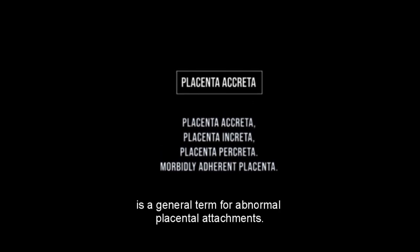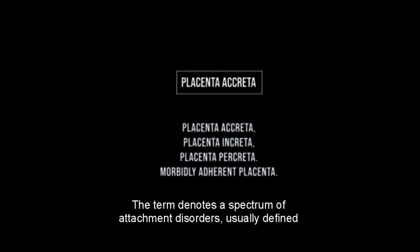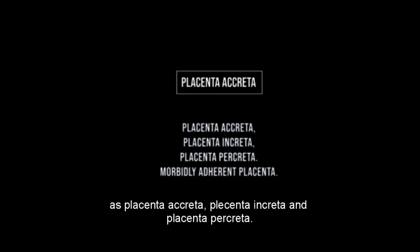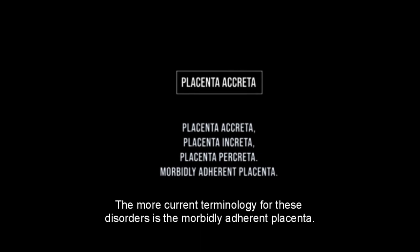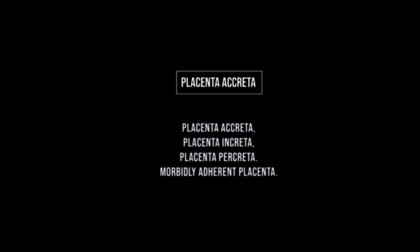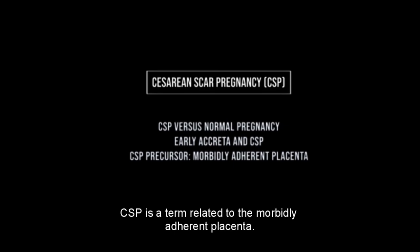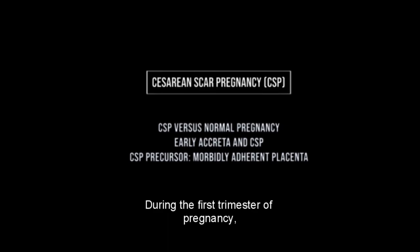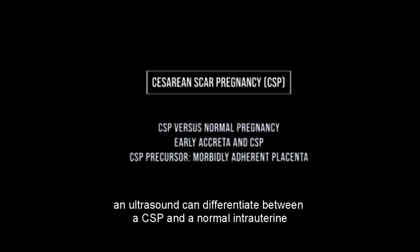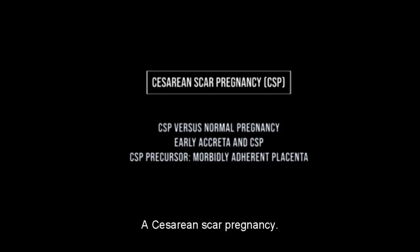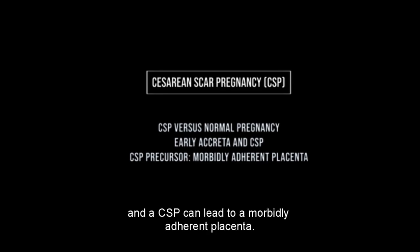Placenta accreta is a general term for abnormal placental attachments, denoting a spectrum of disorders usually defined as placenta accreta, placenta increta, and placenta percreta. The more current terminology is the morbidly adherent placenta. Caesarean scar pregnancy (CSP) is a related term. During the first trimester, ultrasound can differentiate between a CSP and a normal intrauterine pregnancy based on the location of the gestational sac center in relation to the uterus's midpoint axis. A CSP and early placenta accreta are histologically indistinguishable, and a CSP can lead to a morbidly adherent placenta.